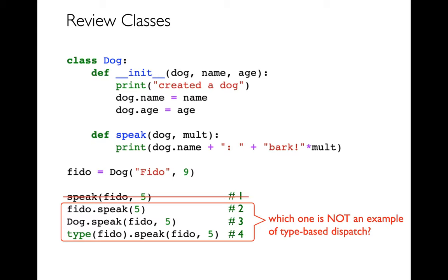Second question is which one of the following is not an example of type-based dispatch?